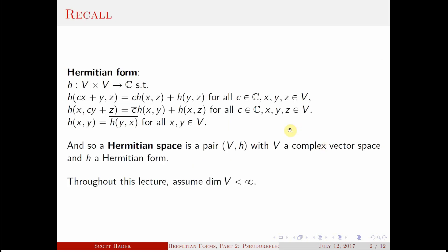Just as a reminder, last time we talked about Hermitian forms, we introduced a definition and talked about how they're sesquilinear maps that satisfy the additional property that the form is conjugate symmetric. So it's linear in the first variable and conjugate linear in the second variable. A Hermitian space is just a complex vector space with some Hermitian form.